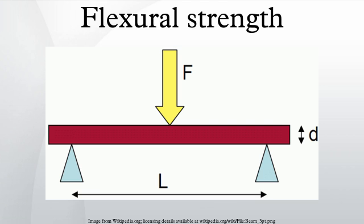Flexural versus tensile strength: the flexural strength would be the same as the tensile strength if the material were homogeneous. In fact, most materials have small or large defects in them which act to concentrate the stresses locally, effectively causing a localized weakness. When a material is bent only the extreme fibers are at the largest stress, so if those fibers are free from defects, the flexural strength will be controlled by the strength of those intact fibers.